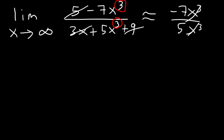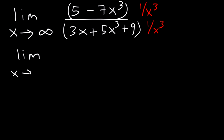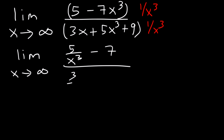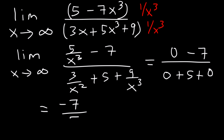But let's confirm it. We need to multiply the top and the bottom by 1 over x cubed, since the highest degree is 3. This gives the limit as x approaches infinity of 5 over x cubed minus 7, divided by 3 over x squared plus 5 plus 9 over x cubed. Anything with infinity in the denominator is 0. So we get 0 minus 7 over 0 plus 5 plus 0, which equals negative 7 divided by 5.